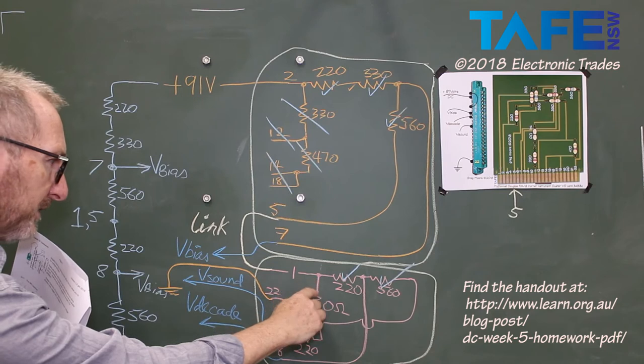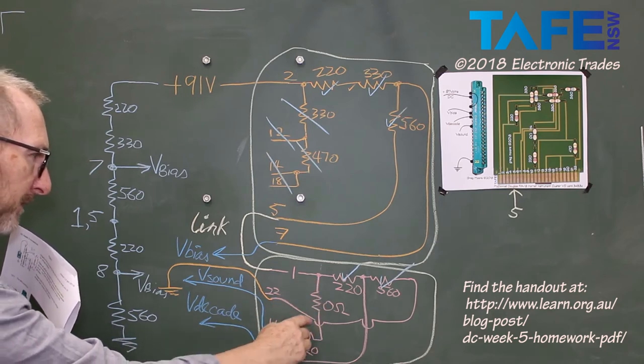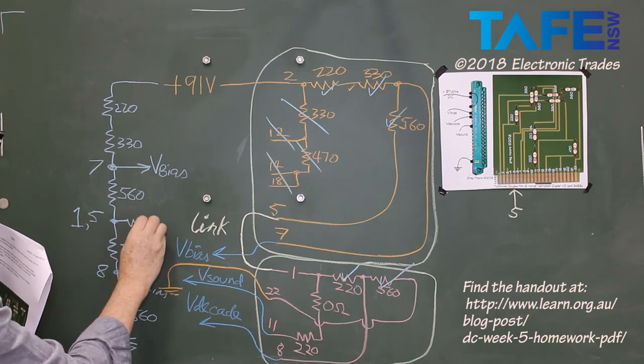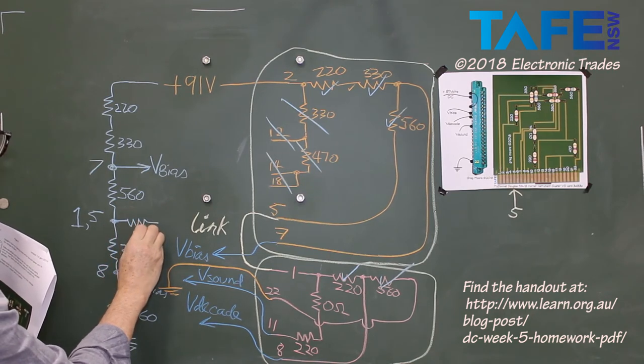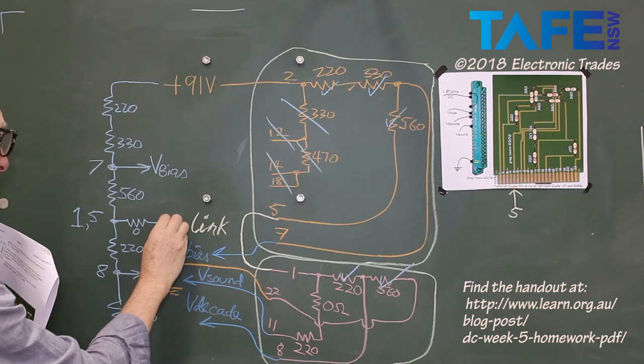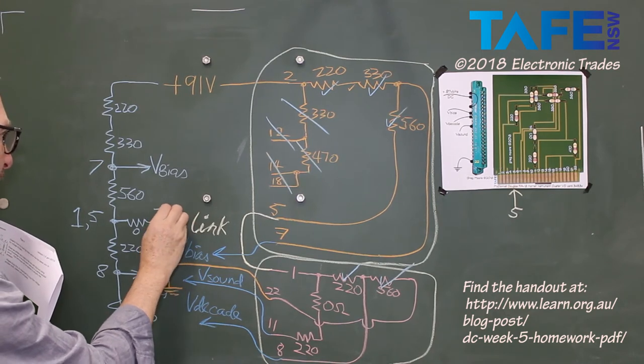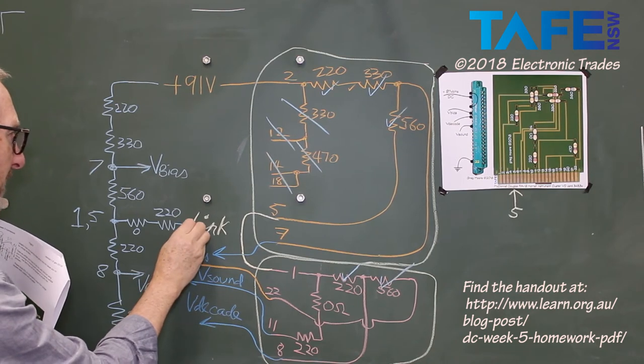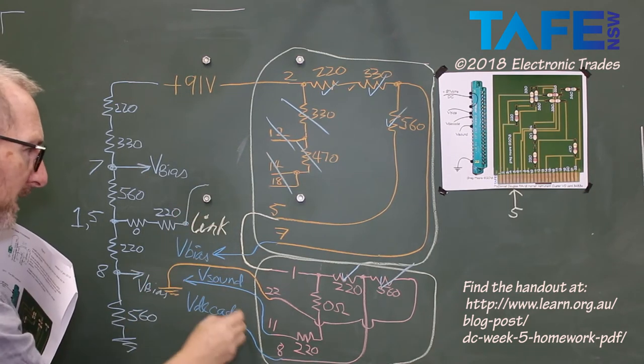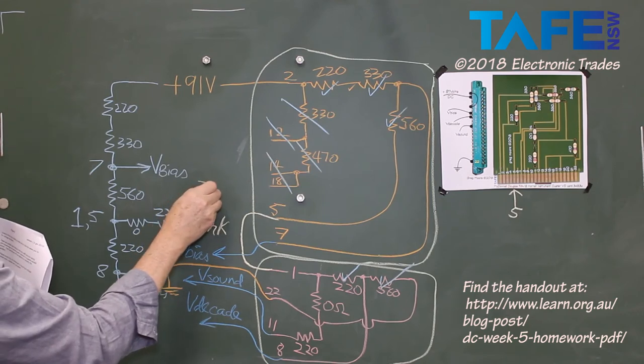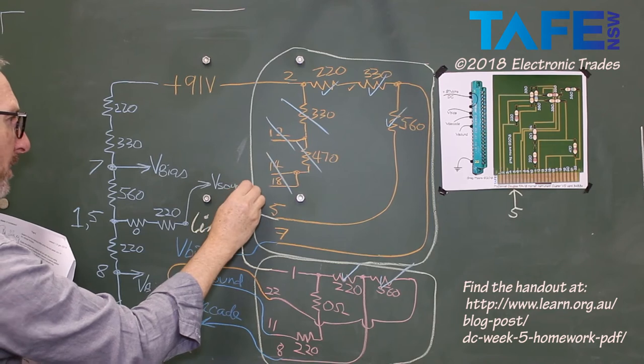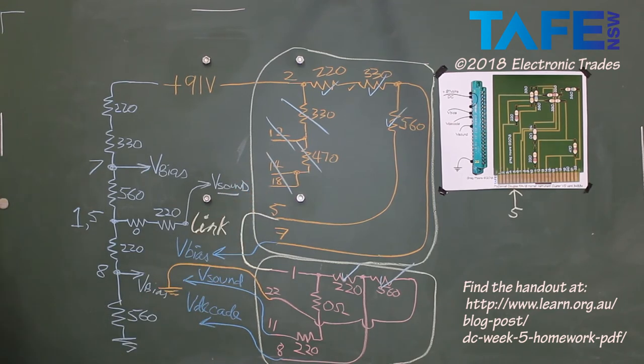Pin number 1, we've got a 0 ohm fusible link and a 220 ohm. 0. And that point there is connected to V-sound. V-sound. There.